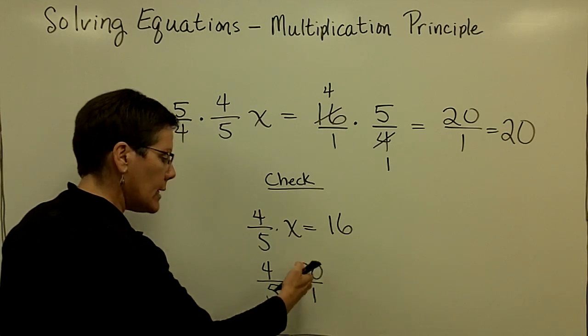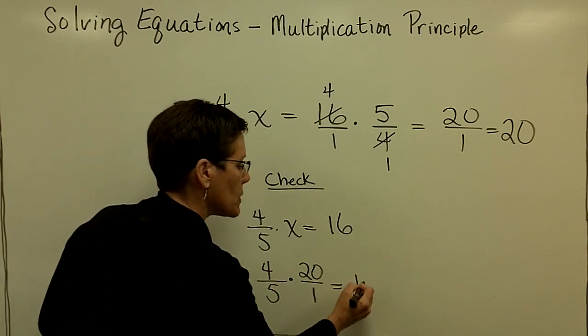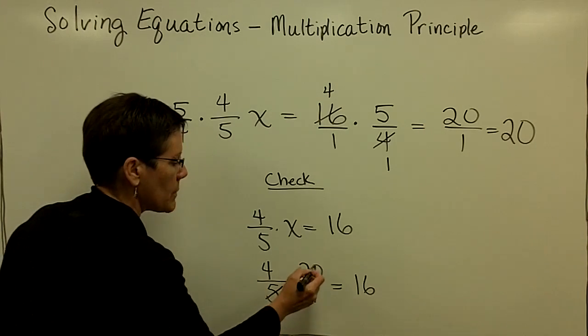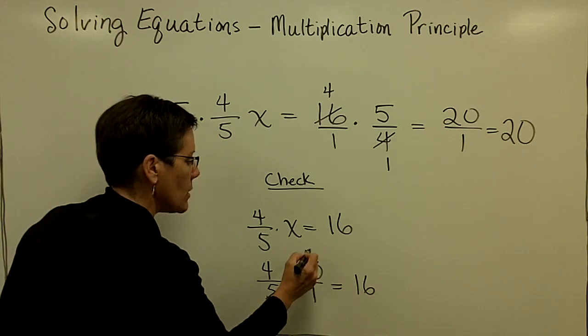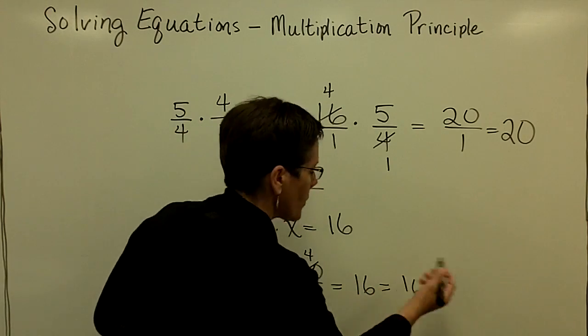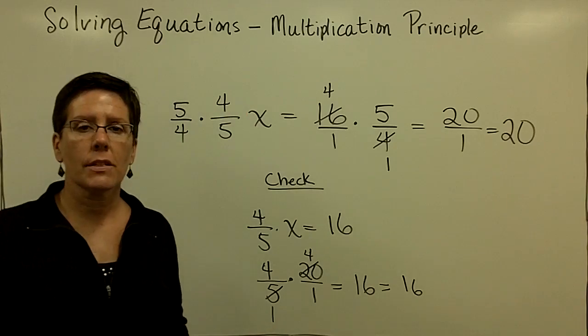Certainly you could call that 80 over 5, and we're wondering if that's equal to 16. Or you could go ahead and say 5 goes into this denominator once and into this numerator 4 times, and 4 times 4 is indeed 16 over the 1, or it is equal to just 16.